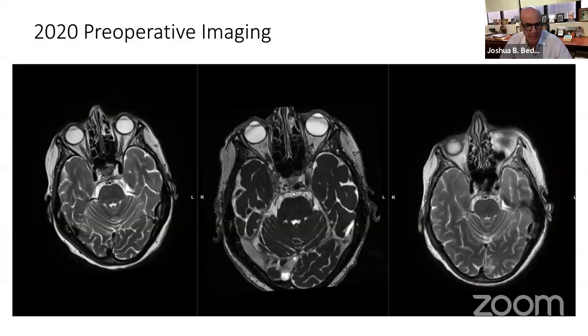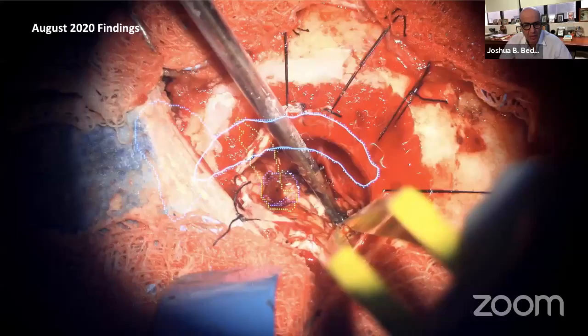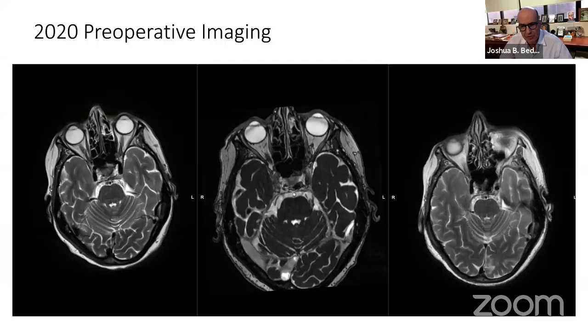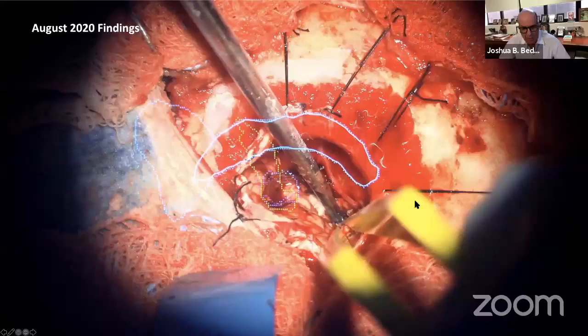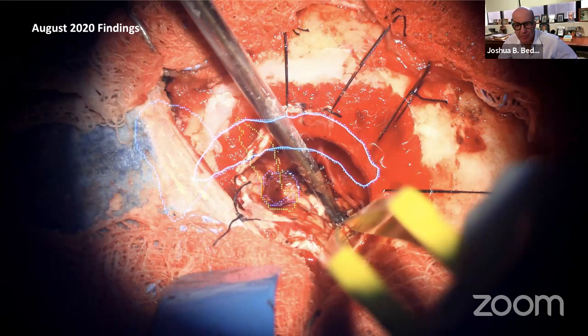Here is the approach on re-operation. You can see the sutures — we've reopened. This is a left-sided case again. There's a blue line on the heads-up display. What is it showing? That's the sigmoid sinus — the transverse sigmoid junction — and it's fairly accurate here.